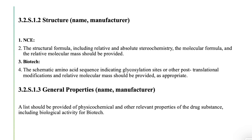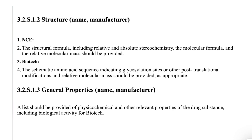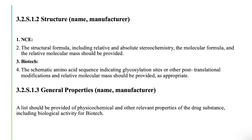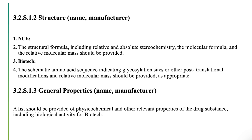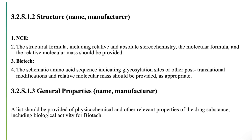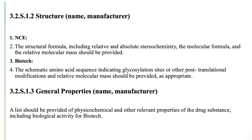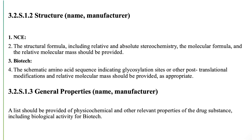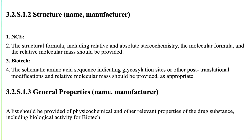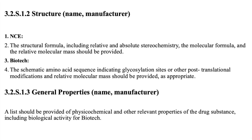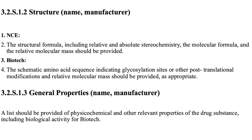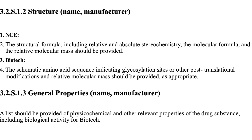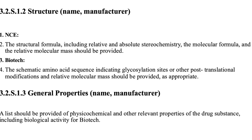3.2.S.1.2 Structure (Name, Manufacturer): The structural formula, including relative and absolute stereochemistry, the molecular formula, and the relative molecular mass should be provided. For biotech, the schematic amino acid sequence indicating glycosylation sites or other post-translational modifications and relative molecular mass should be provided, as appropriate. 3.2.S.1.3 General Properties (Name, Manufacturer): A list should be provided of physicochemical and other relevant properties of the drug substance, including biological activity for biotech.